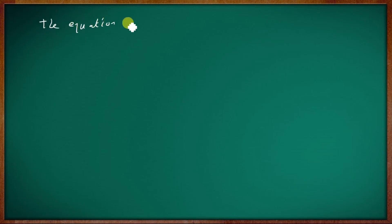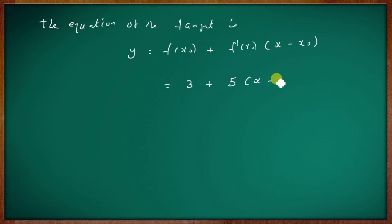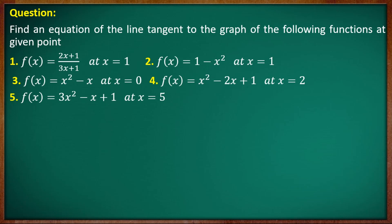The equation of the tangent line is y = f(x₀) + f'(x₀)·(x − x₀) = 3 + 5(x − 1) = 3 + 5x − 5 = 5x − 2. So 5x − y = 2. This completes the first module.